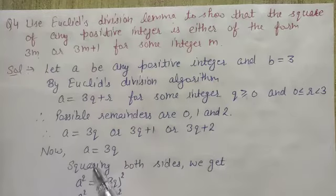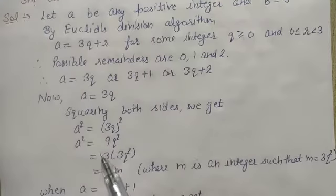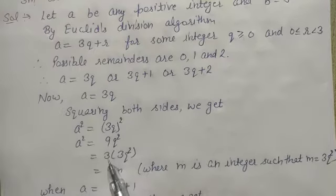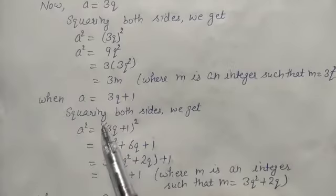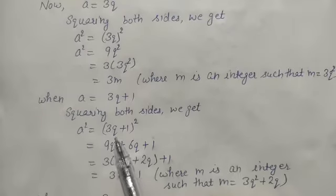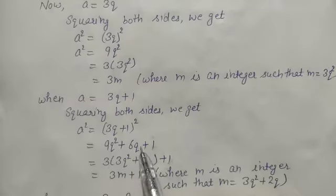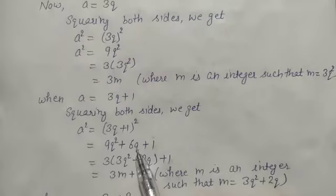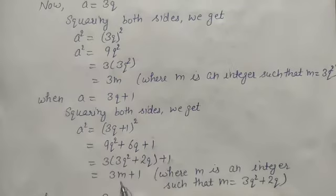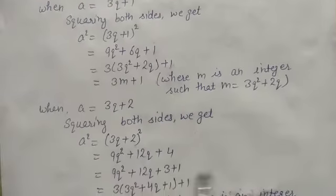When a equals to 3q, squaring both sides: a² equals (3q)² equals 9q². Taking 3 common, we have 3(3q²). Putting 3q² equals m, where m is an integer, we get a² equals 3m. When a equals to 3q+1, squaring both sides: a² equals (3q+1)² and applying (a+b)² equals a²+2ab+b², we get 9q²+6q+1. Taking 3 common from the first two terms: 3(3q²+2q)+1, and putting 3q²+2q equals m, we get a² equals 3m+1.